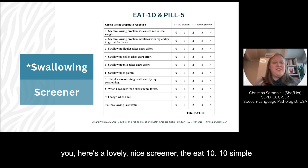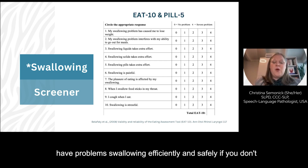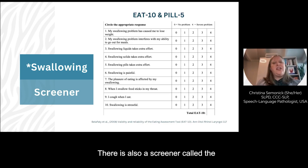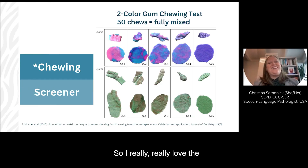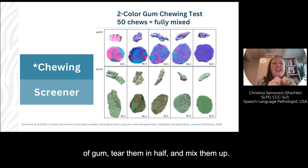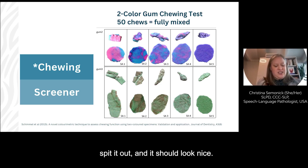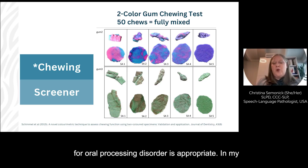If you aren't sure if this is a problem for you, here's a nice screener: the EAT-10 — 10 simple questions rating from no problem to severe problem. A score of three or greater might indicate you have problems swallowing efficiently and safely. If you don't really have concerns regarding your swallow but you notice that pills are a little more challenging, there is also a screener called the PILL-5 made by the same researchers. These screeners, though, are really only looking at the swallow itself. I really love the Schimmel two-color gum chewing test — you take two different colored pieces of gum, tear them in half and mix them up. You should be able to chew that 50 times and then spit it out, and it should look like you'd never know it was two different colors. If you don't have that, a referral for oral processing disorder is appropriate.